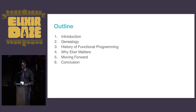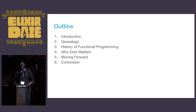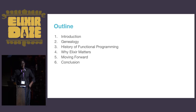The general outline for this talk would be as follows. First we'll have a short introduction, following that we'll discuss what I mean by genealogy, then we explore the history of functional programming before of course discussing why Elixir matters. We'll then wrap up with some thoughts on how we can move forward.